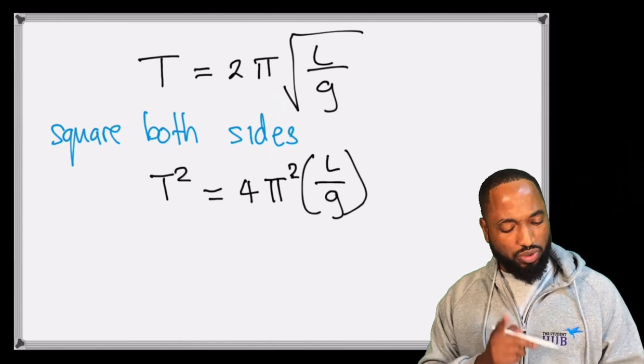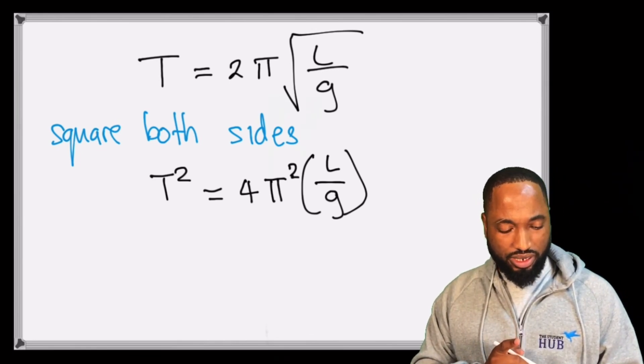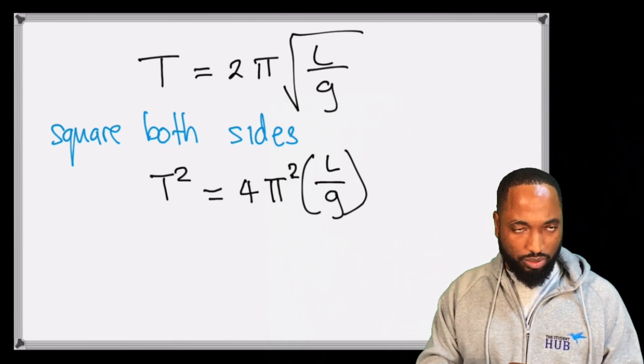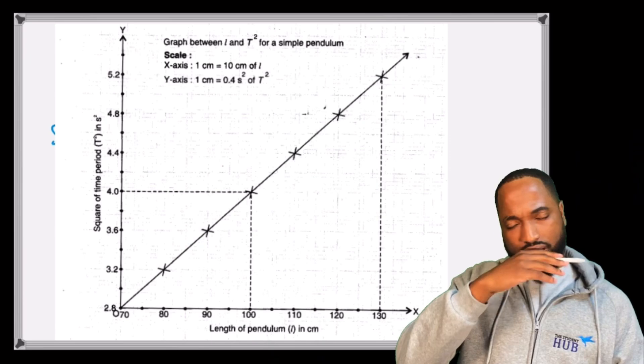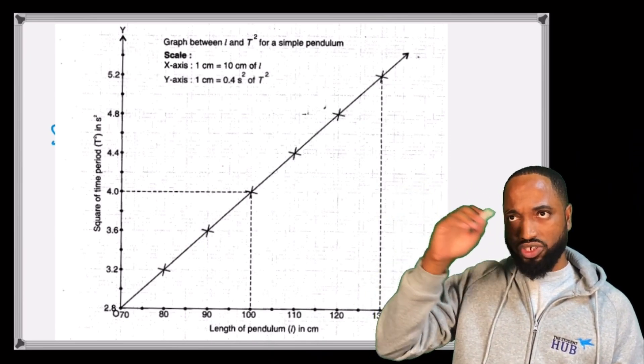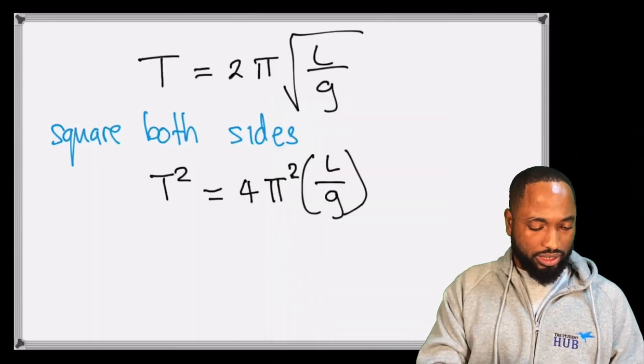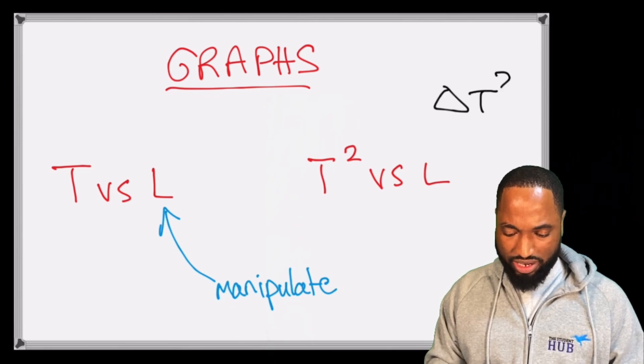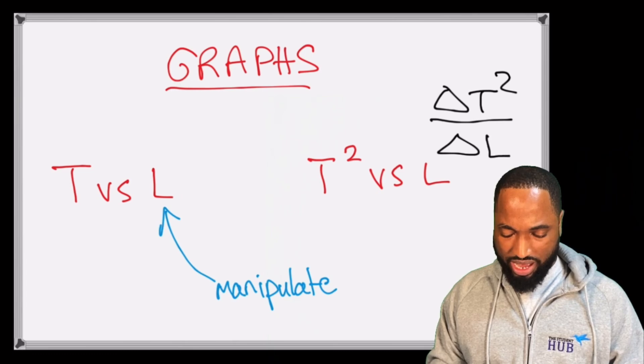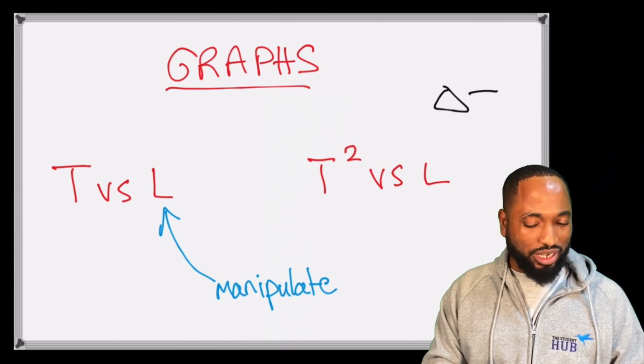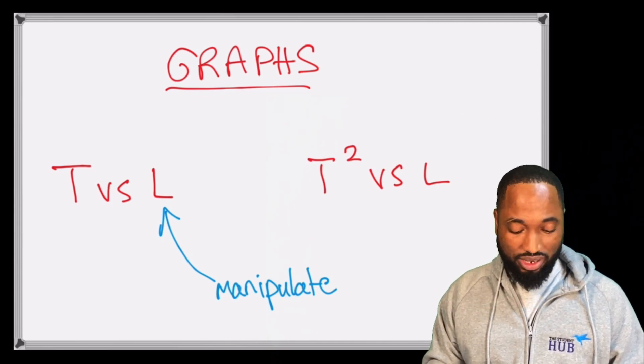And what do we want to make the subject of the formula? In this case, we want to make the gradient, an idea of the gradient, the subject of the formula. Now we had T squared against L, so the gradient is really the T squared values, the change in T squared values with respect to the L. So it's really something like this: does this ring a bell to you? Delta T squared over delta L. So this just means change, or in other words, y₂ minus y₁ over x₂ minus x₁. So that's your gradient there.